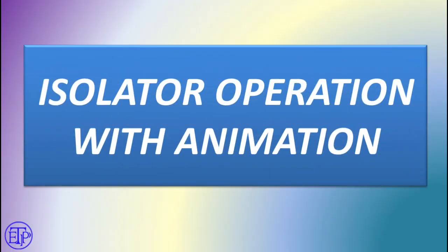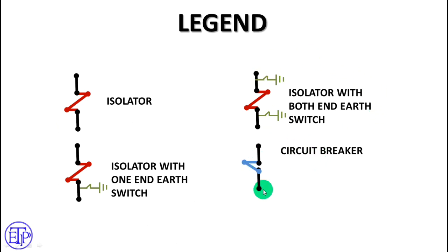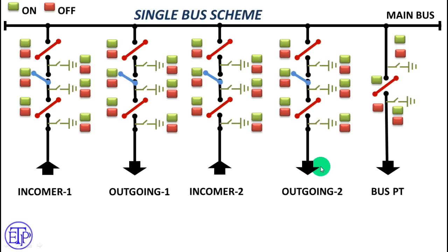Now we will see the isolator operation with animation — that is the most interesting part of the video. Before starting the animation, let us see the legends. This is the isolator without any arc switch. This is an isolator with one-end arc switch. This is an isolator with both-end arc switch. And this is a circuit breaker. First we will see the single bus scheme — operation of isolator with a single bus bar.